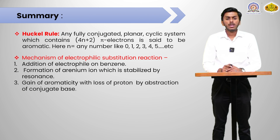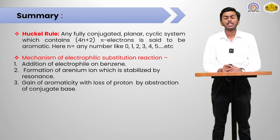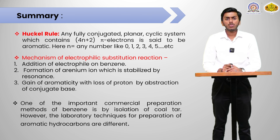Summary: in today's session, we learned about Hückel's rule — for a system to be aromatic it should be fully conjugated, planar, and cyclic, and contain 4n+2 pi electrons where n is 0, 1, 2, 3, etc. We discussed the mechanism of electrophilic substitution reaction consisting of three steps: addition of the electrophile to benzene, formation of the arenium ion stabilized by resonance, and gain of aromaticity by loss of a proton abstracted by the conjugate base. We also discussed preparation methods of benzene from acetylene, from phenol, and others. Thank you.